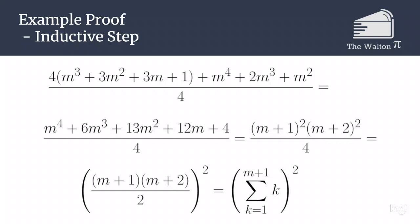Using the same example that I referenced earlier, we can replace m plus 1 times m plus 2 all over 2 with the sum from k equals 1 to m plus 1 of k.